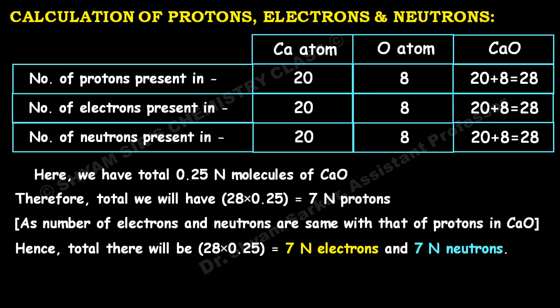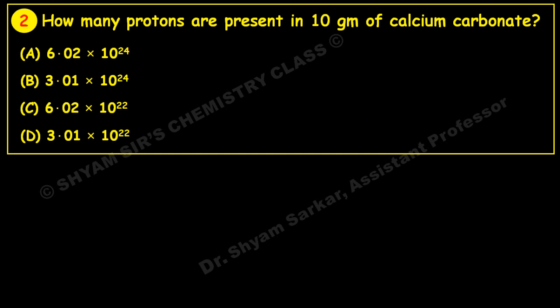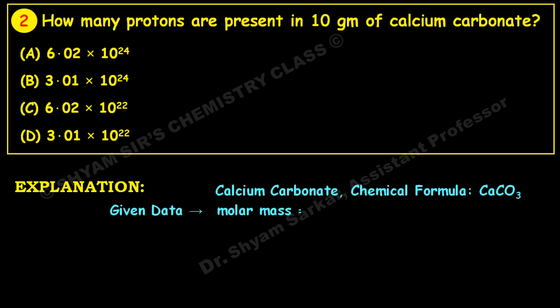Next question: how many protons are there in 10 grams of calcium carbonate? Answers are given in terms of Avogadro's number. Given data: calcium carbonate, chemical formula CaCO₃, molar mass given is 10 grams, and molecular weight is 100 — calculated from calcium + carbon + 3 oxygen.